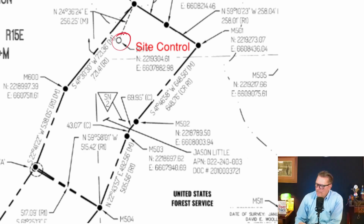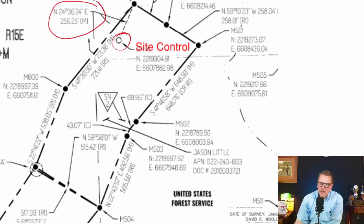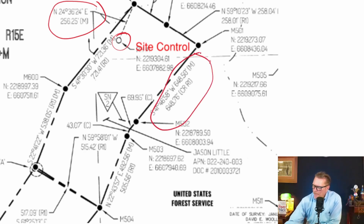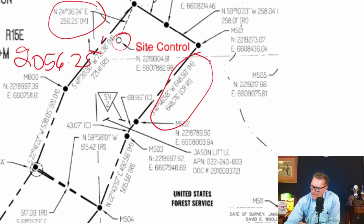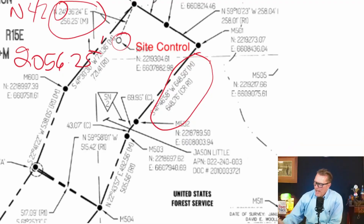Can you see the problem? They have a single tie from a single point to establish their basis of bearings. How's that a problem? Suppose this distance shown here is 256.25 — suppose it was supposed to be 2056.25. Would you know? Suppose this bearing was supposed to be north 42 east. Would you know? No, you wouldn't. Therefore, we have a good coordinate on a single point and we have no idea where this traverse data is. I could make this tie any bearing and any distance and yet this entire figure would close.